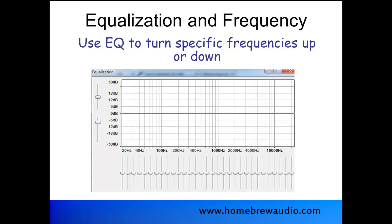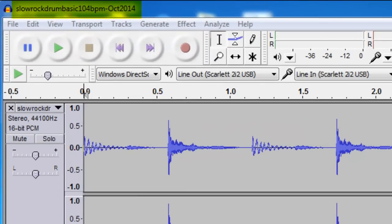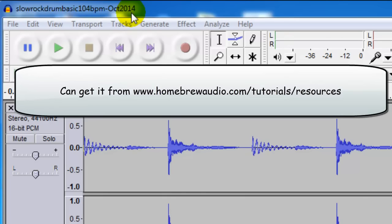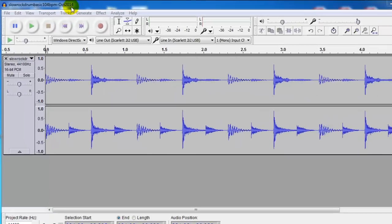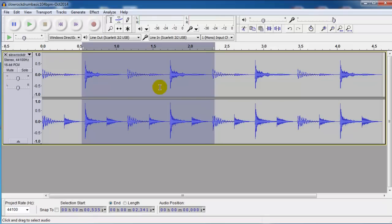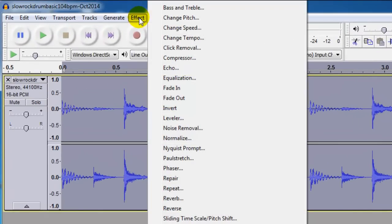Let's look at the EQ tool in Audacity. First, let's open the file we've been working with in Audacity called Slow Rock Drum Basic 104 BPM for beats per minute, October 2014. If you don't already have this on your hard drive, you can download it from the Homebrew Audio website. I showed you how to do that in the last lesson. So once you've got your file open, select some of the audio either by dragging on it here, just to select some, or you can select it all by coming to some blank space over in the track control panel and double clicking like so.